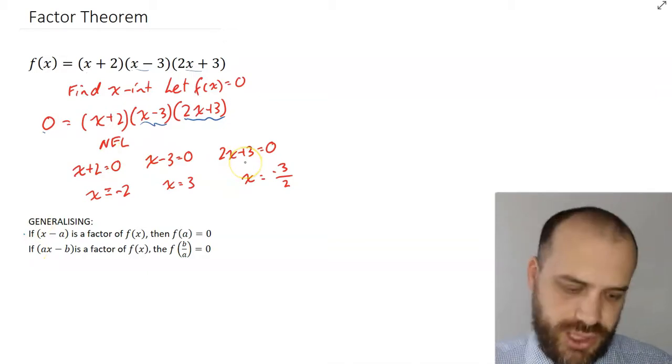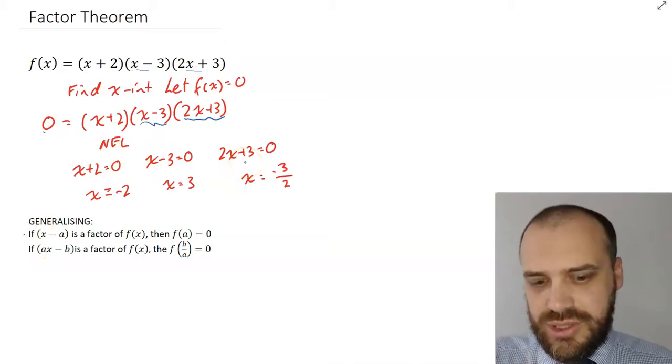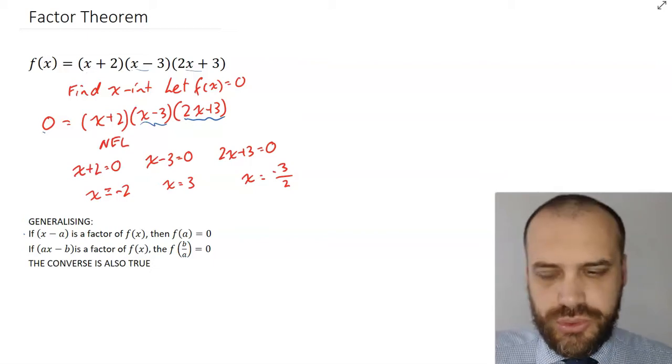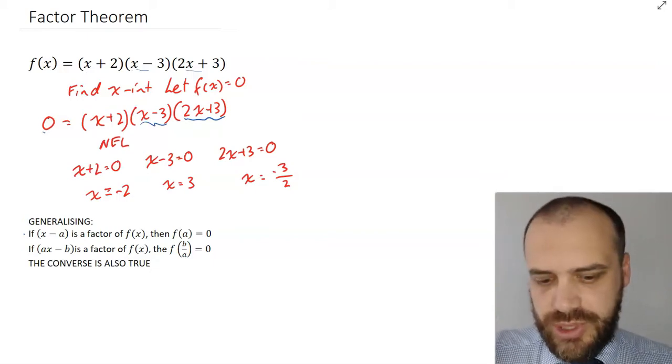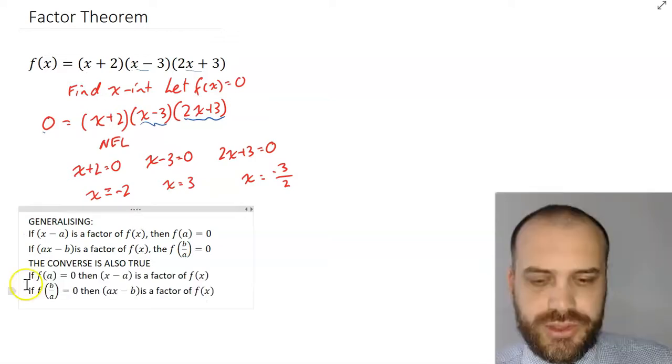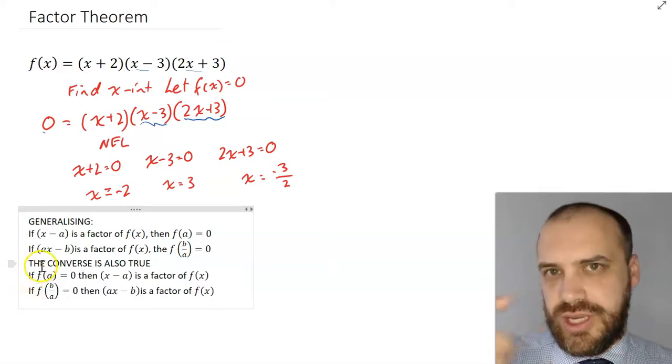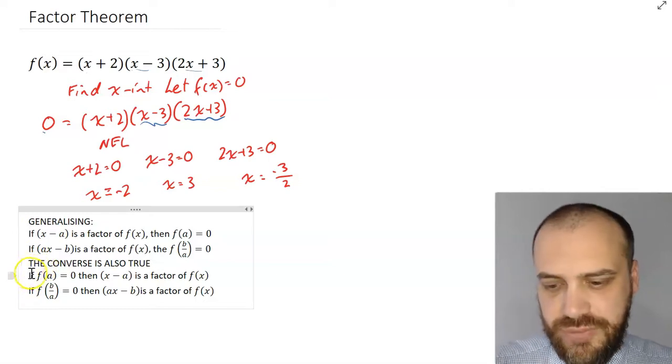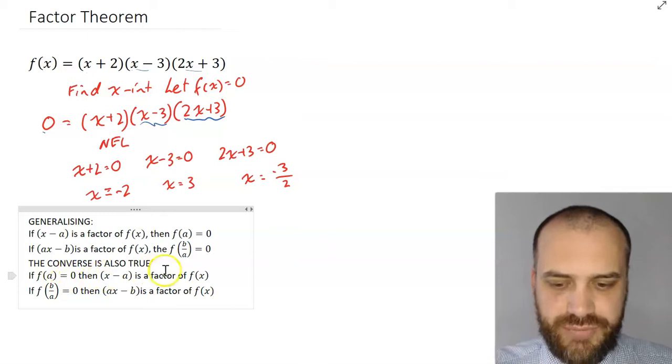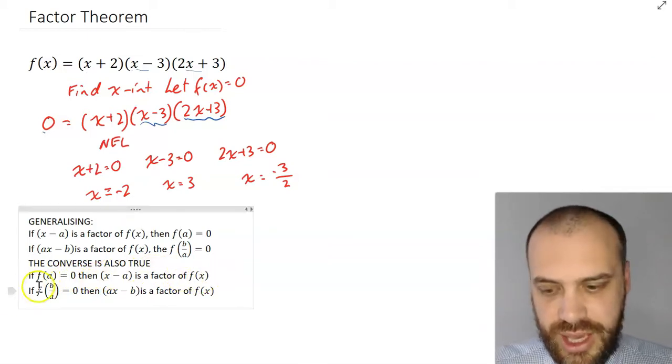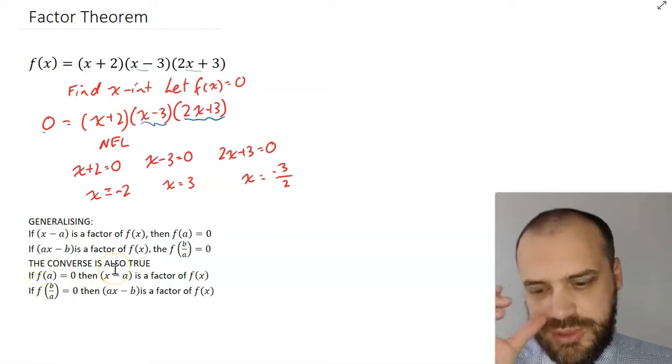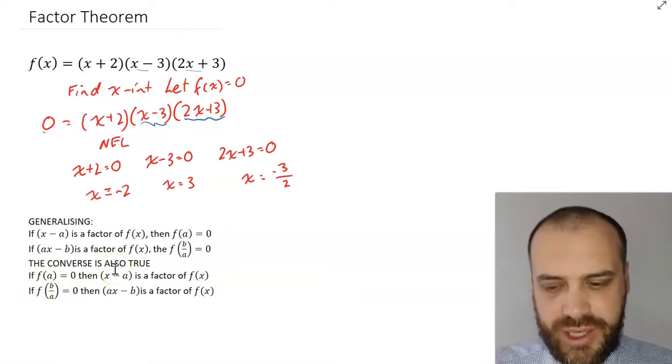Now, this is kind of where it gets a bit new. And the new thing is that the converse is also true. We can swap these statements around, and those statements will also be true. So, the converse is just reading those sentences in reverse. If f(a) equals 0, then (x - a) is a factor of f(x). And if f(b/a) equals 0, then (ax - b) is a factor of f(x).